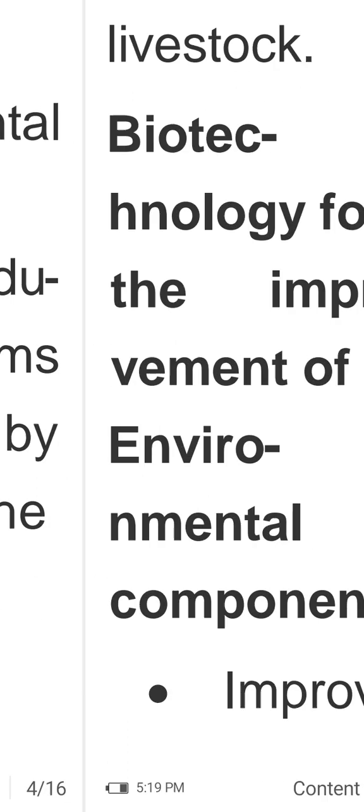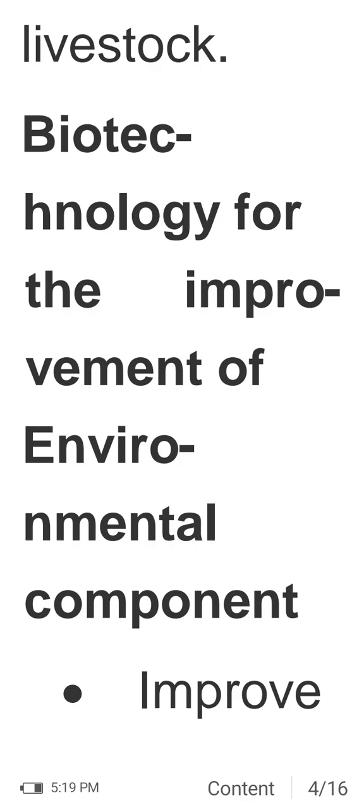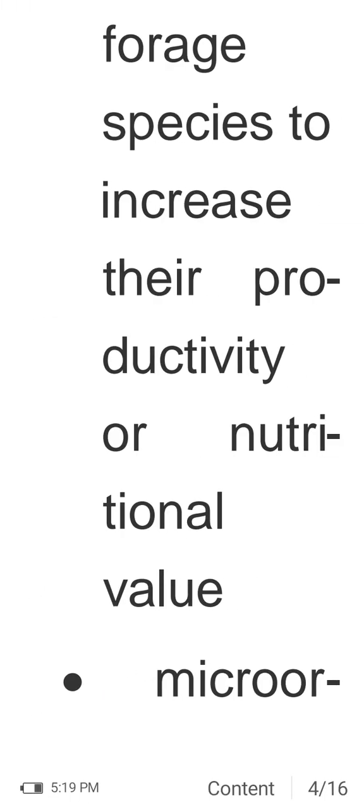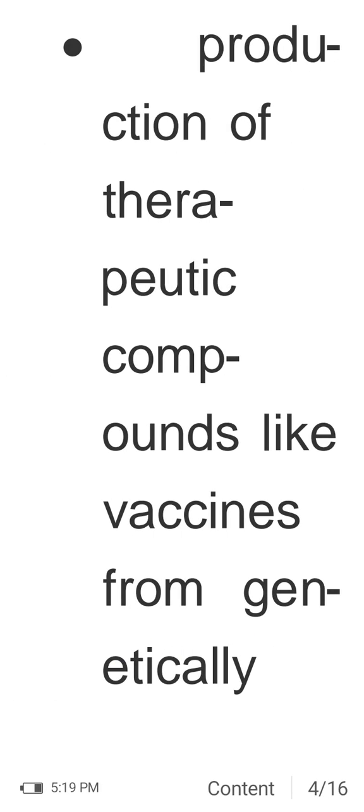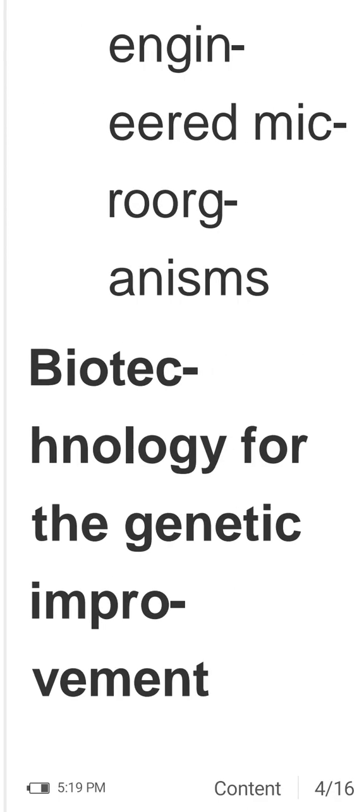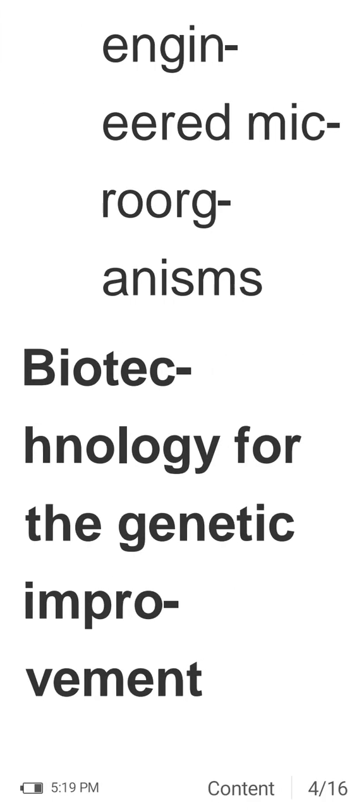Animal biotechnology contributes to animal production by improving the environmental component of production systems and by improving the genetic makeup of livestock. Forage species can be improved to increase productivity or nutritional value. Microorganisms are engineered to produce food additives, improve gut microflora, and produce therapeutic compounds like vaccines from genetically engineered microorganisms.